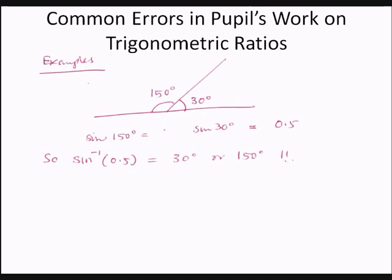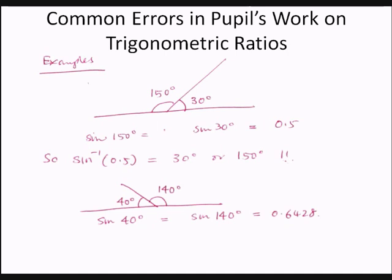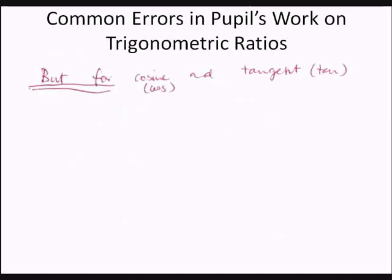So inverse sine of 0.5 will give you either 30 degrees or 150 degrees. Similarly, sine 40 degrees equals sine 140 degrees, both equal to 0.6428. Therefore, the inverse sine of 0.6428 gives either 40 degrees or 140 degrees. However, for the cosine and tangent trigonometric ratios, the results are different.